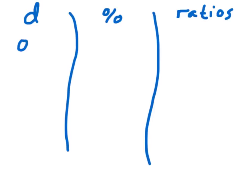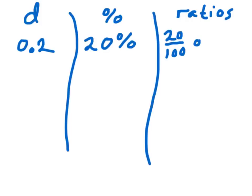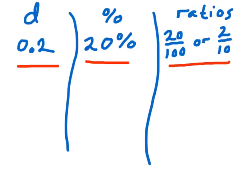I'm going to start with a decimal of 0.2. 0.2 can also be written as a percentage, which would be 20%. I could also write that as a ratio, which would be 20 out of 100, or 2 out of 10. I want you to identify the fact that all three of these represent the same number mathematically.